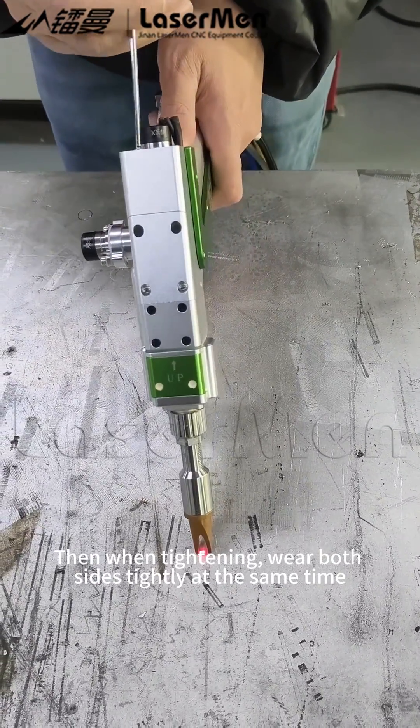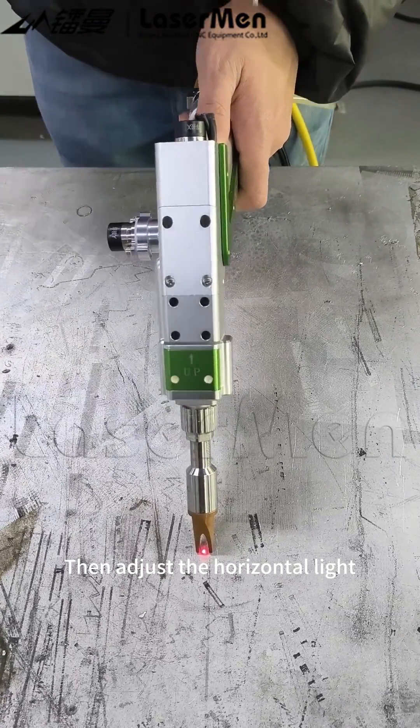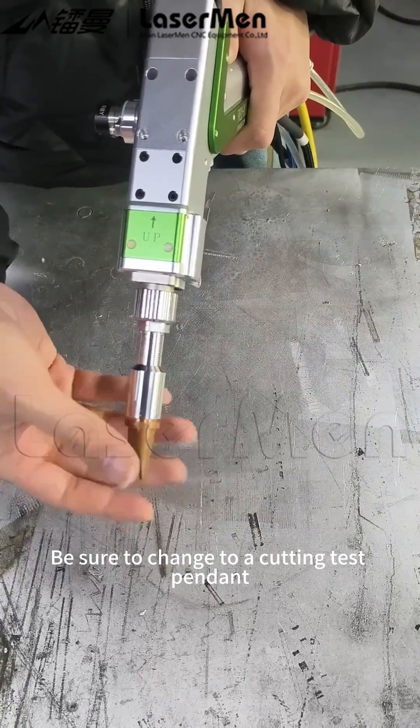Then when tightening, tighten both sides at the same time. Then adjust the horizontal light. Be sure to change to a cutting test pendant.